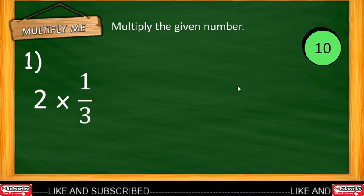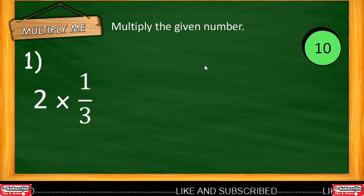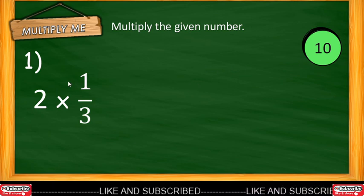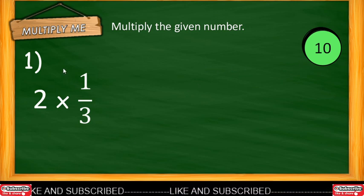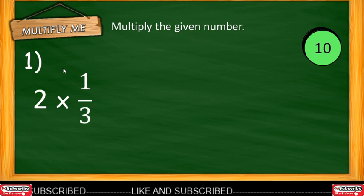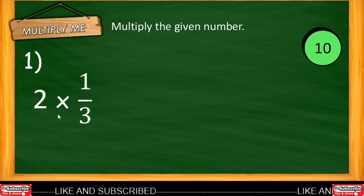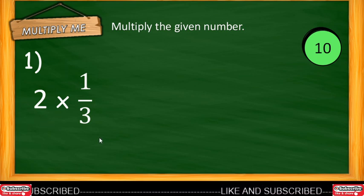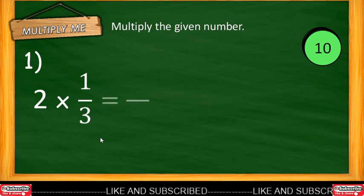Multiply Me. You're going to multiply the given numbers. You have 10 seconds to answer. Let's have sample number 1: 2 multiplied by one-third. You have 10 seconds to answer. Our timer starts now.